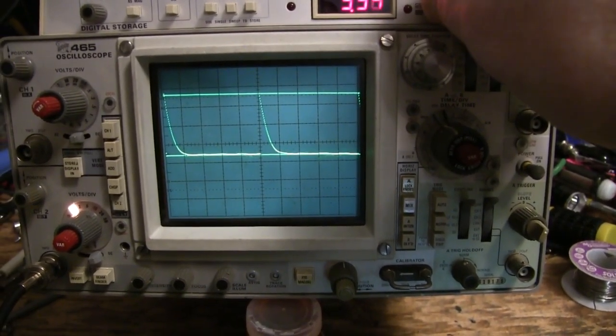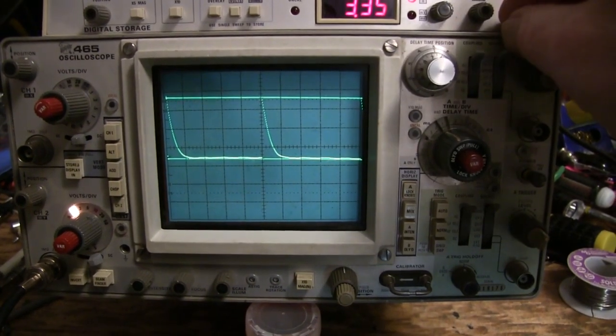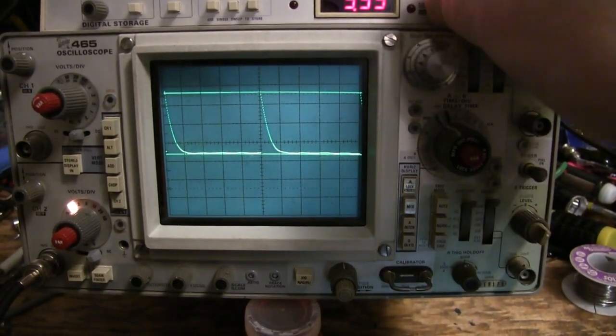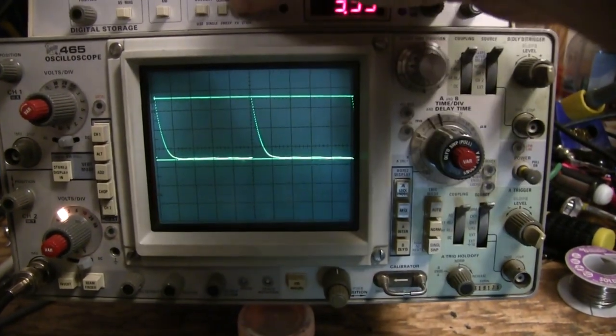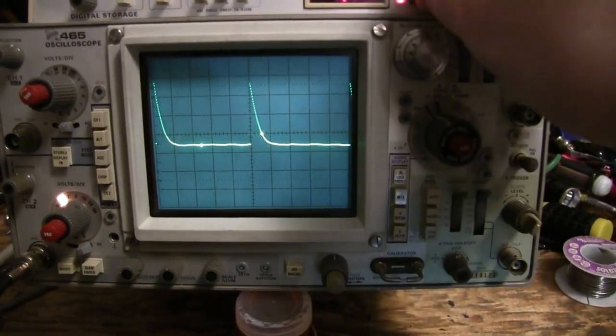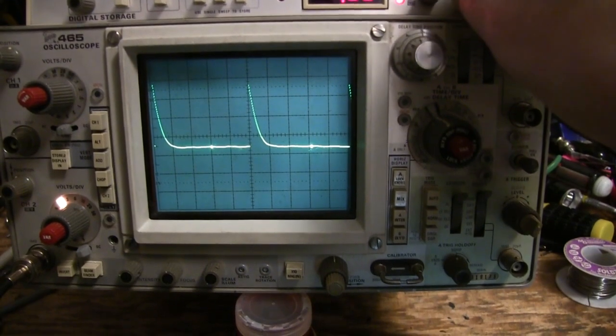Unlike the 468, which has a single knob and then a button to choose which cursor the knob controls. It has a time mode, which is like the 468s.